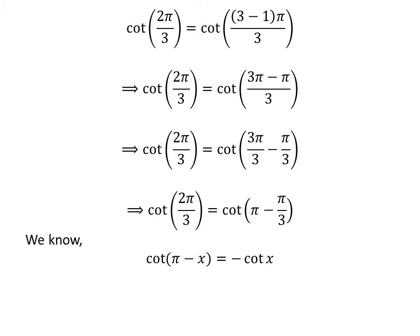We know the famous trigonometry identity cotangent of pi minus x is equal to minus cotangent of x. The proof of the identity has been explained in the video appearing in the right corner of this video. The link of the video is also given in the description section.